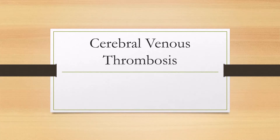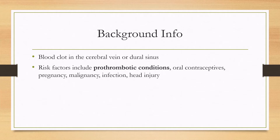Let's talk about cerebral venous thrombosis. This is a blood clot that happens in the cerebral vein or dural sinus. Risk factors include prothrombotic conditions, which are the main risk factor, as well as more transient risk factors such as oral contraceptives and pregnancy, malignancy, infection, and head injury.